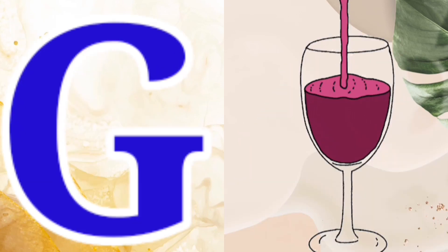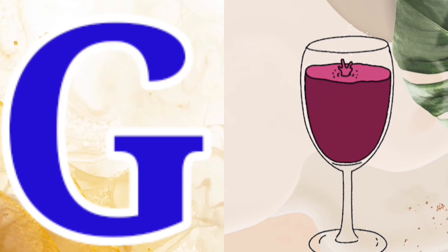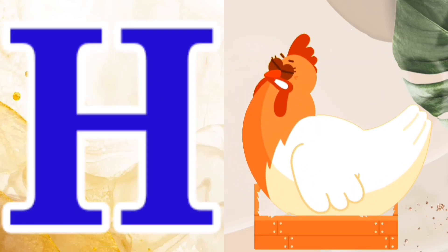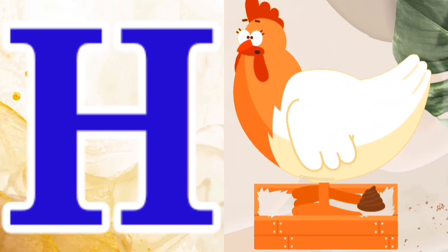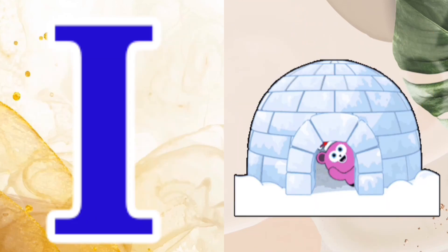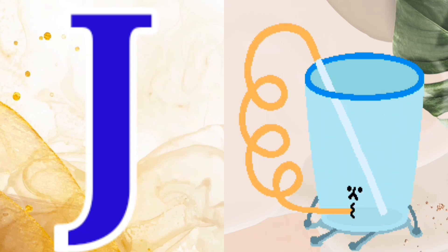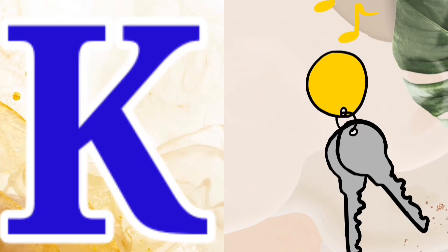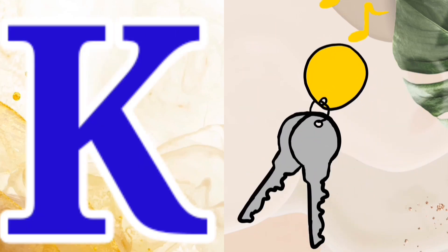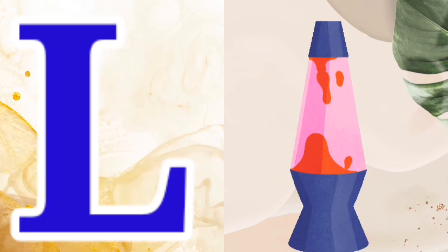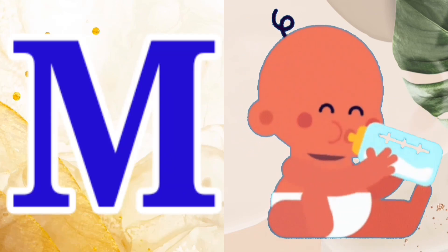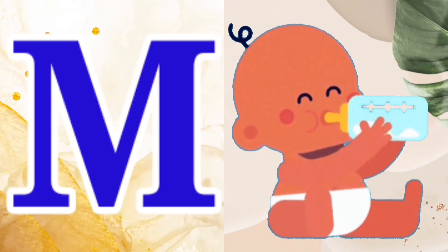G for Glass, H for Hen, I for Igloo, J for Juice, K for Key, L for Lamb, M for Milk.